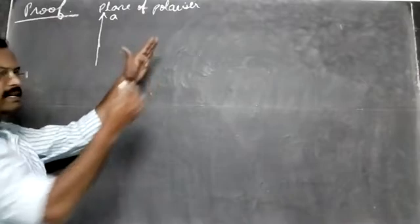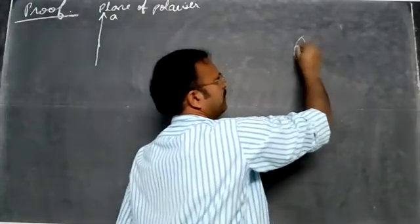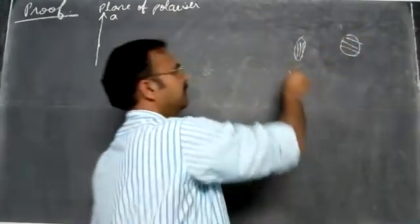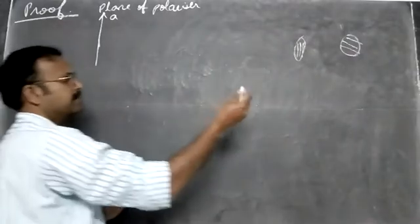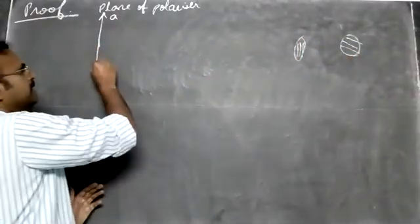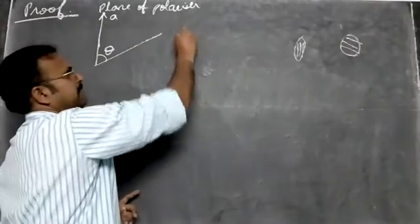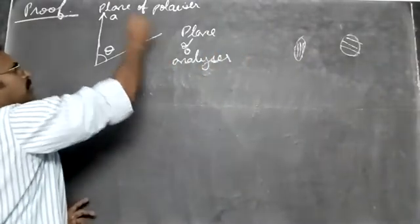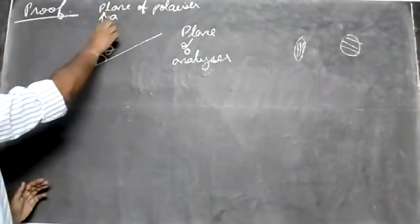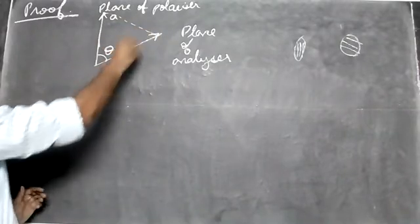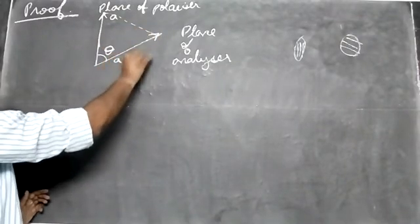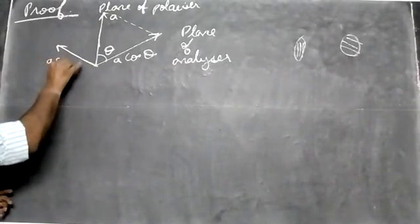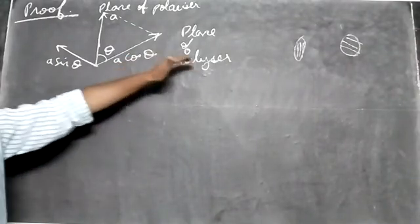For the proof: the light comes from the polarizer with amplitude A — that is the plane of the polarizer. The analyzer is at some other angle theta to the polarizer. The plane of the analyzer is at angle theta. Since A is a vector, we resolve the amplitude into two components: the horizontal component A cosθ and the vertical component A sinθ.